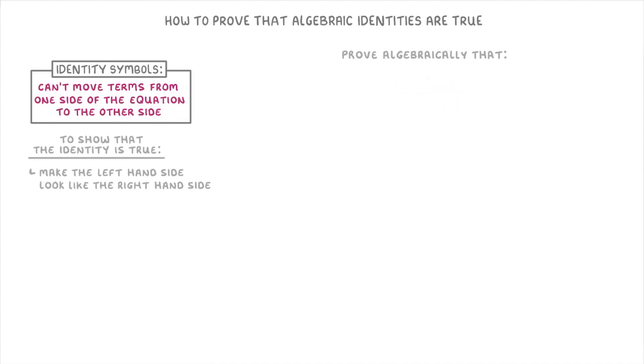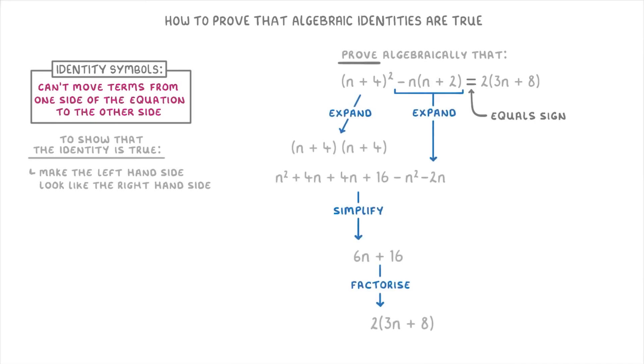One last thing I want to say is that you might sometimes get proof questions like this that don't contain the identity symbol and just have an equal sign instead. But as long as they're asking you to prove it, then you still do it in exactly the same way as we've been doing in this video.